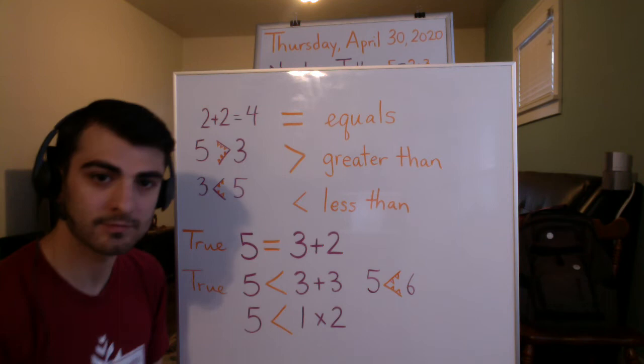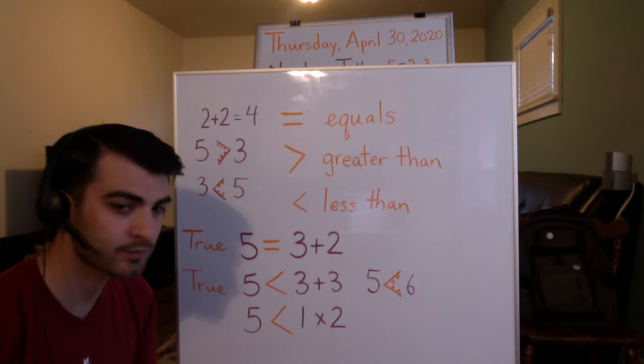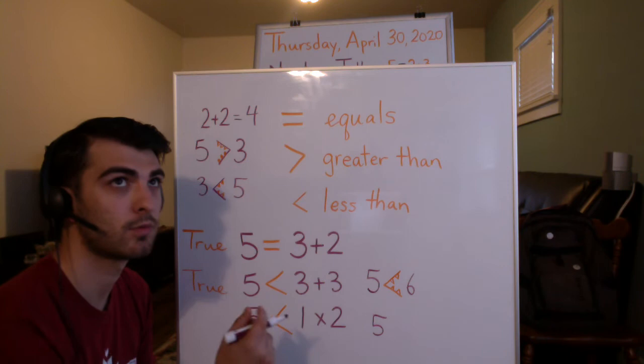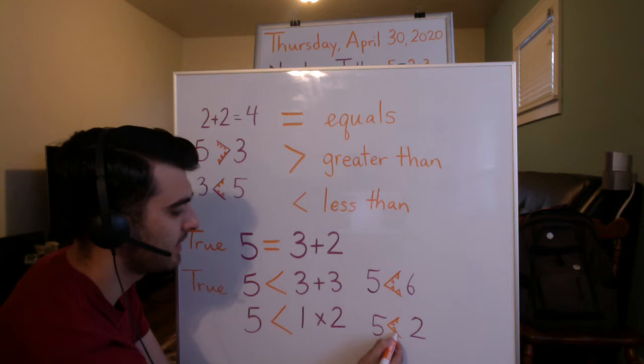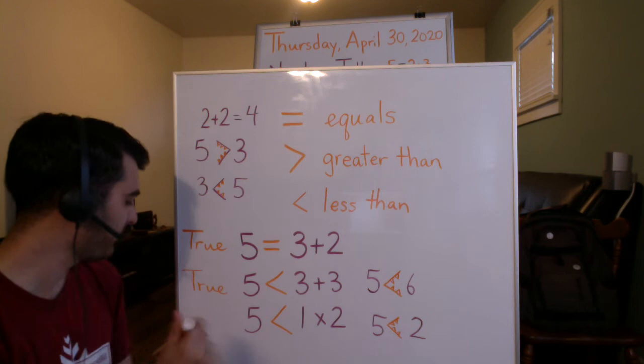And then here: 5 is less than 1 times 2. Well, let's rewrite this — 1 times 2 is 2. Is the alligator mouth eating the bigger number? No! 2 is less than 5, so this statement is false.